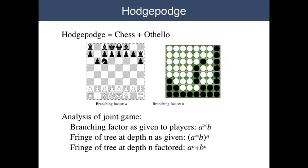To see this, consider the size of the game tree for HodgePodge. Supposing that one game tree has branching factor A and the other has branching factor B, then the branching factor of the joint game is A times B. At any point in the game, a player has A times B possible moves, and the size of the fringe of the game tree at level N is A times B to the N. However, the two games are independent — moving in one subgame does not affect the state of the other. So the player really should be searching two smaller game trees: one with branching factor A and the other with branching factor B. In this way, at depth N, there would be only A to the N plus B to the N possible states. This is a huge decrease in the size of the search space.